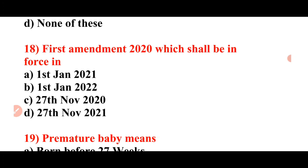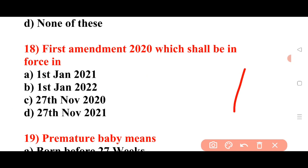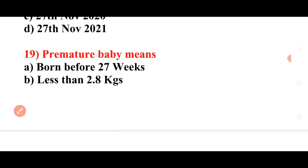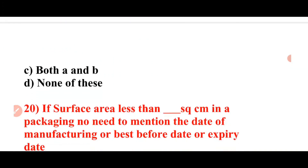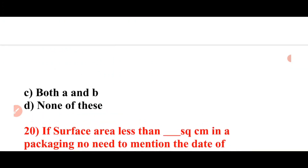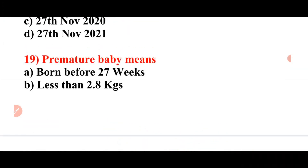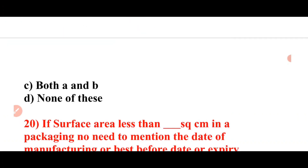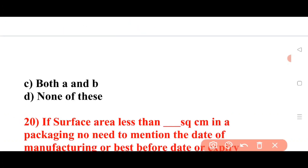Next question: The 1st amendment of 2020 shall be enforced from which date? Options: 1st June 2021, 1st June 2022, 27th November 2020, 27th November 2021. Answer: 1st June 2022 is the correct answer. Next question: What is the meaning of premature baby? Answer: None of the above options is correct.